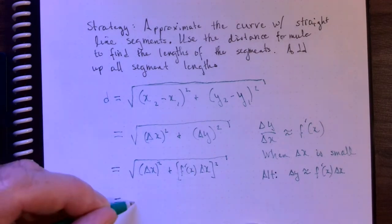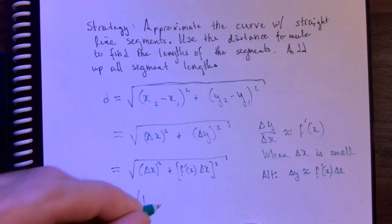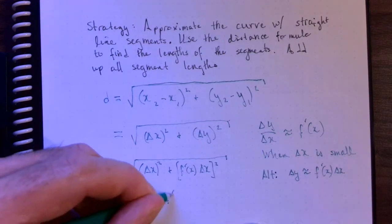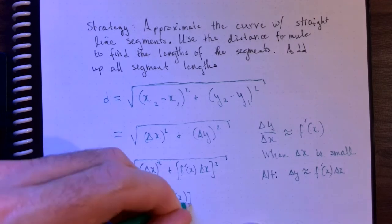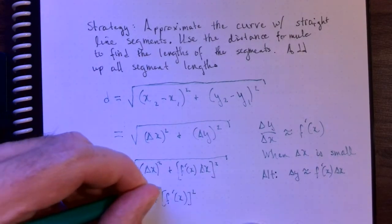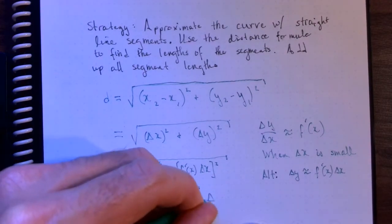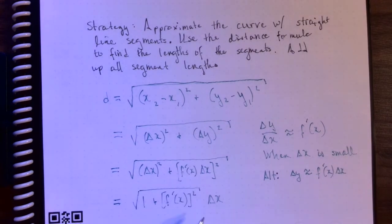In fact, it has a delta x squared. So I'm going to factor that out. In fact, I'm going to completely factor it out from underneath the square root. So if I factor it out from under the square root, it's just going to be a delta x.